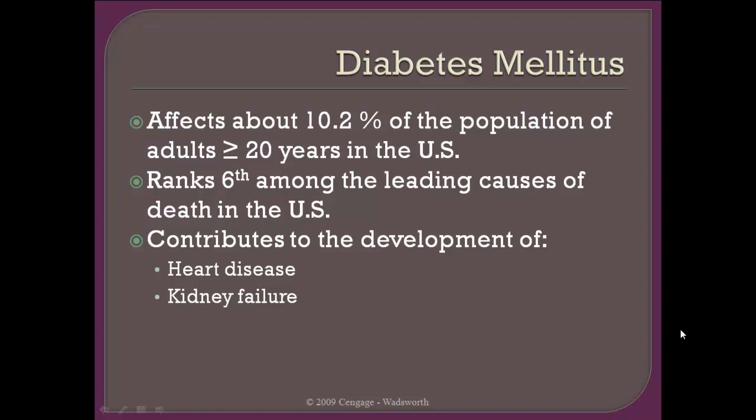Diabetes affects about 10% of the adult population and ranks 6th among the leading causes of death in the U.S. People who have diabetes will often have fairly significant vascular disease, which can affect the heart leading to heart attack, and can also lead to stroke and peripheral artery disease. Additionally, over a long enough period of time, diabetes leads to kidney disease and ultimately kidney failure.